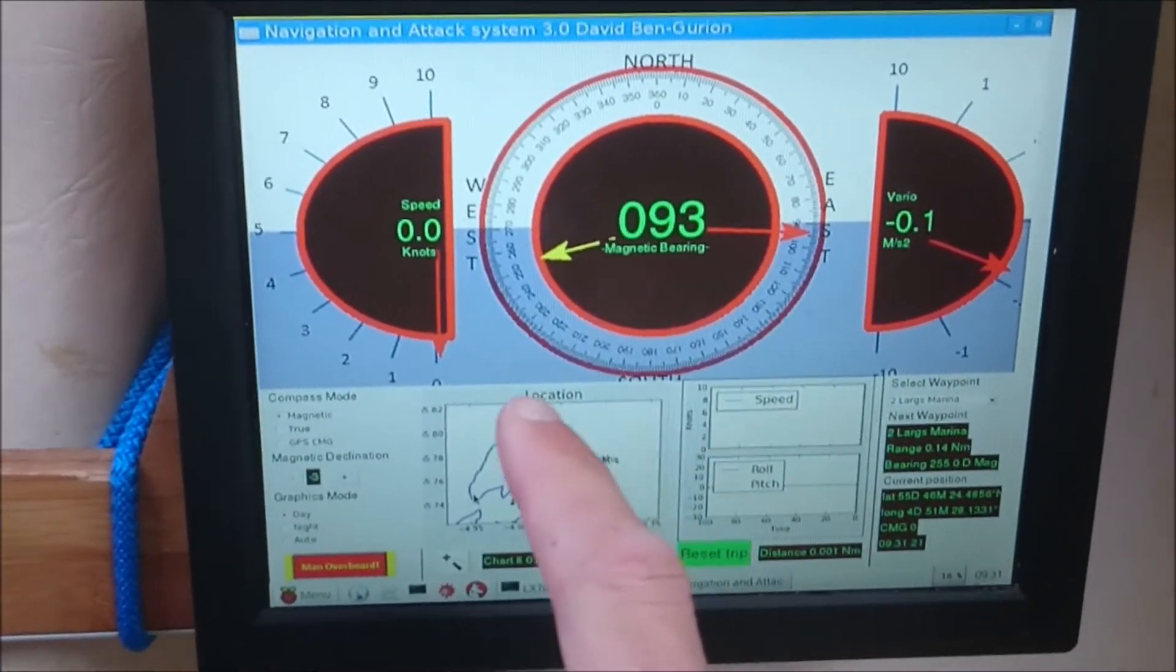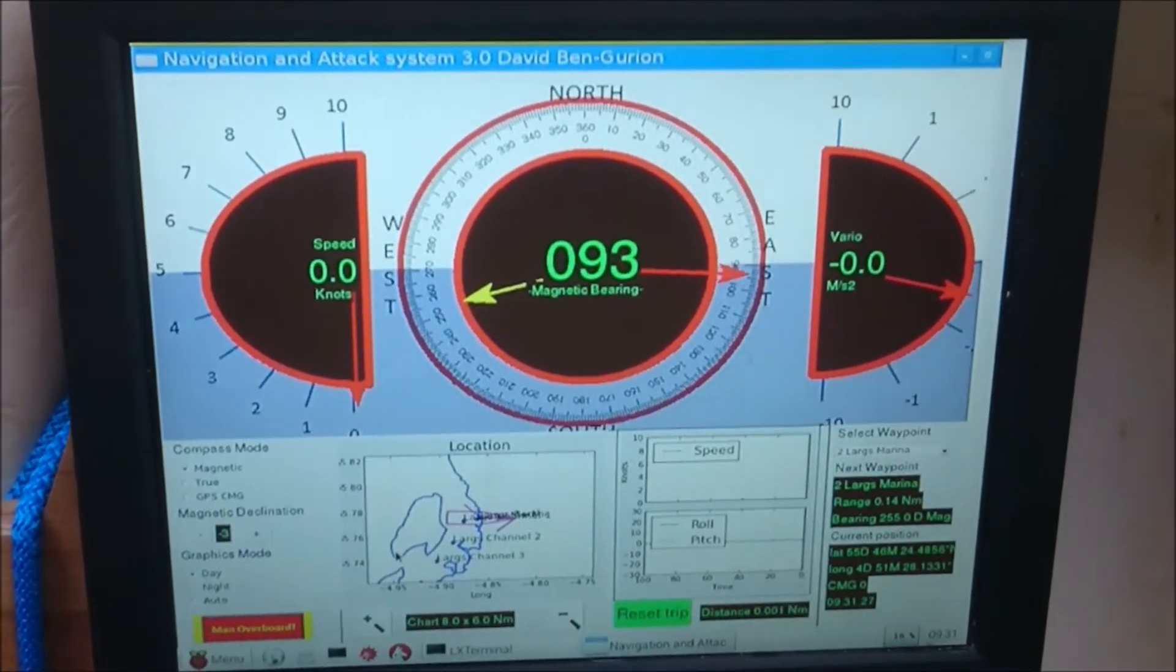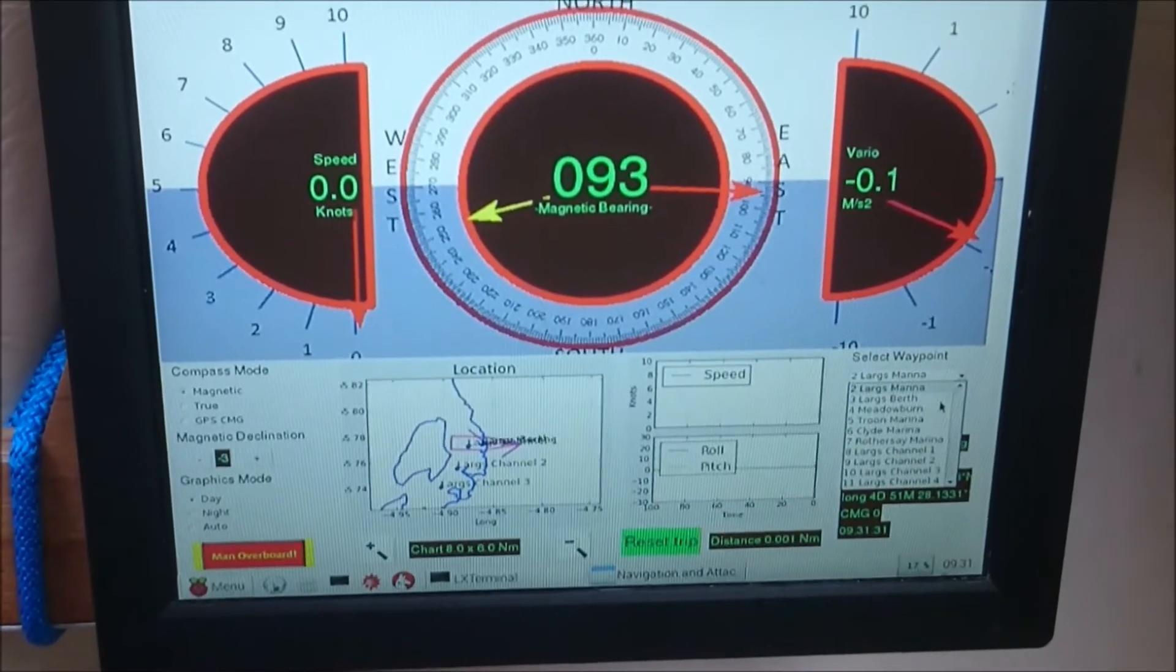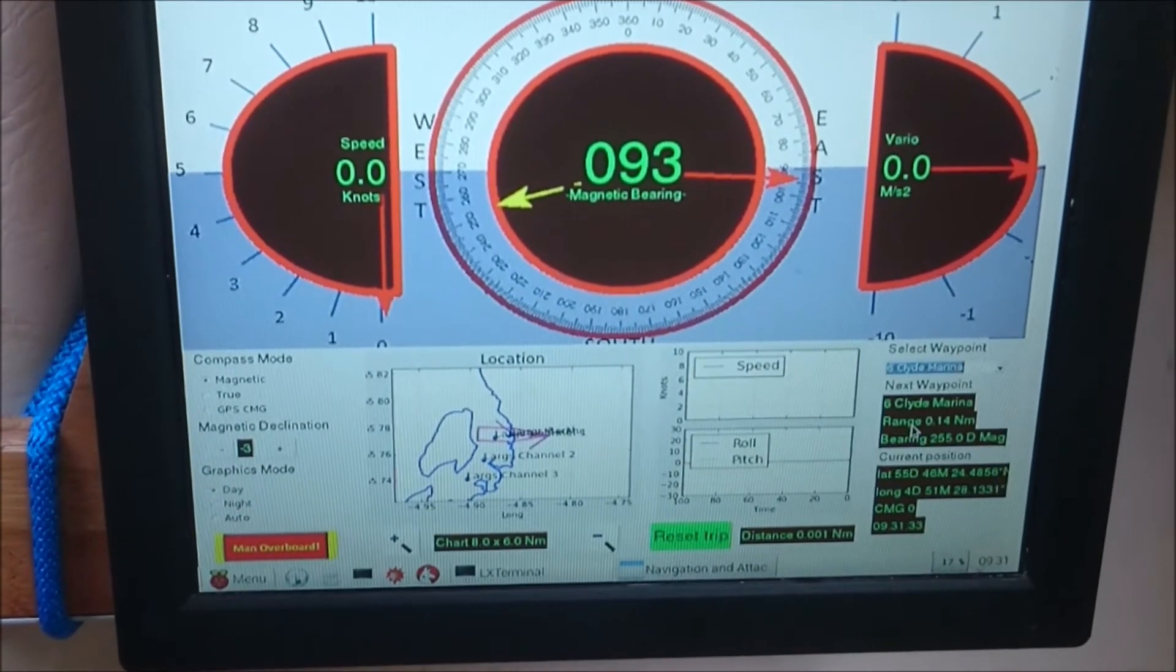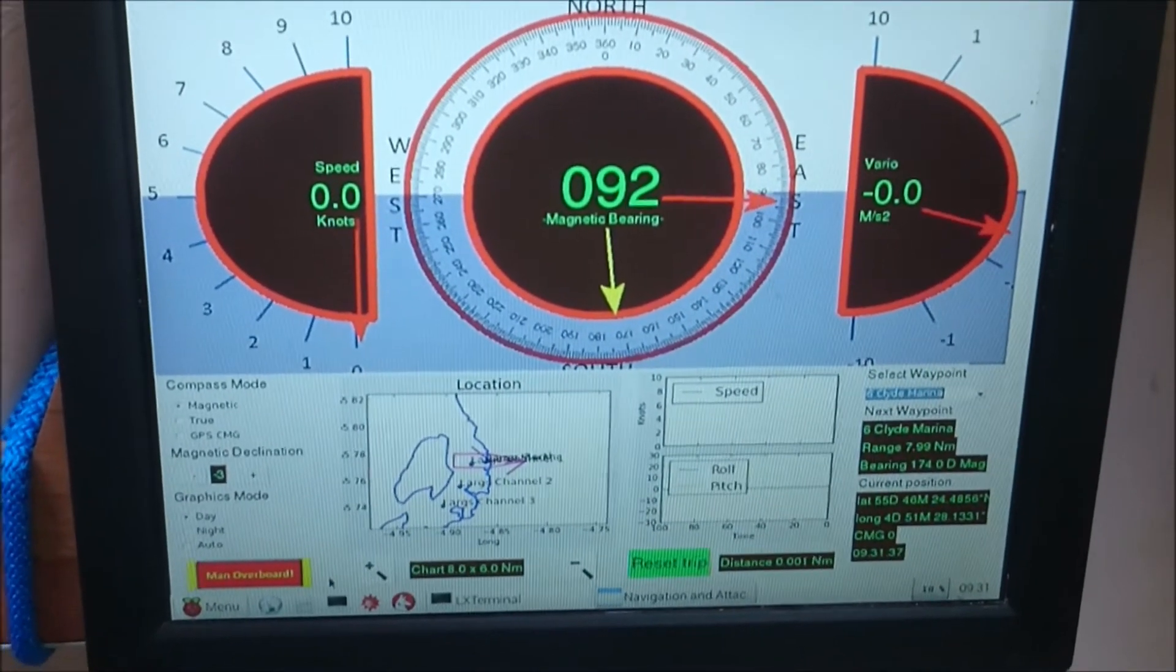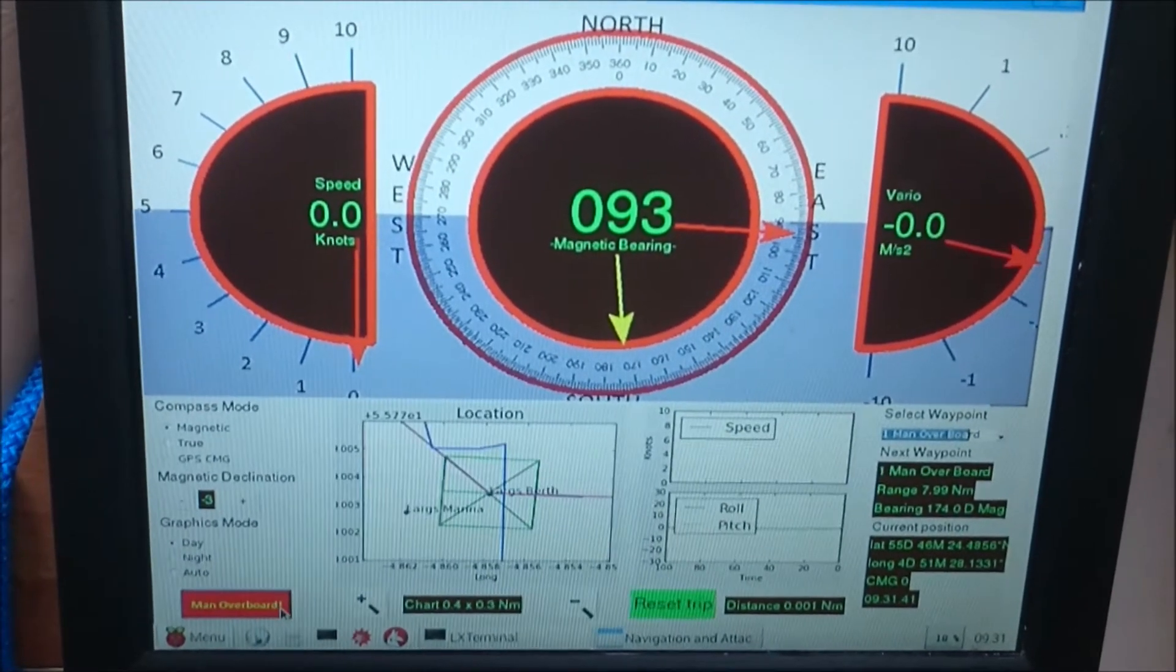You can see here on this main display, things are quite big. And we're pointing that way which is to Largs marina, which we already are. So just for fun, just to demonstrate what happens, I'm going to go for Clyde marina which is down there. And then I'm going to press the man overboard soft button. As I say, pressing the hard button would be the same. Press man overboard.